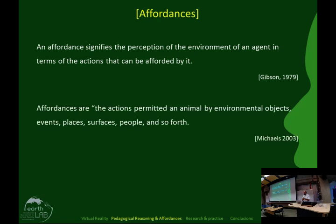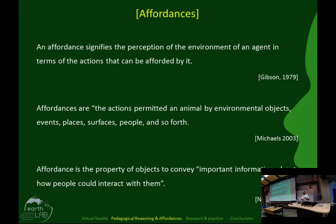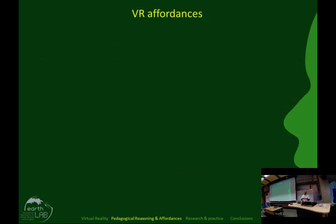Michaels introduced a slightly different definition, saying that affordances are the actions permitted by environmental objects, events, places, surfaces, people, and so forth. Norman transferred the term to the interface field and proposed that an affordance is the property of objects to convey important information about how people could interact with them. Now let's see what the virtual reality affordances are.